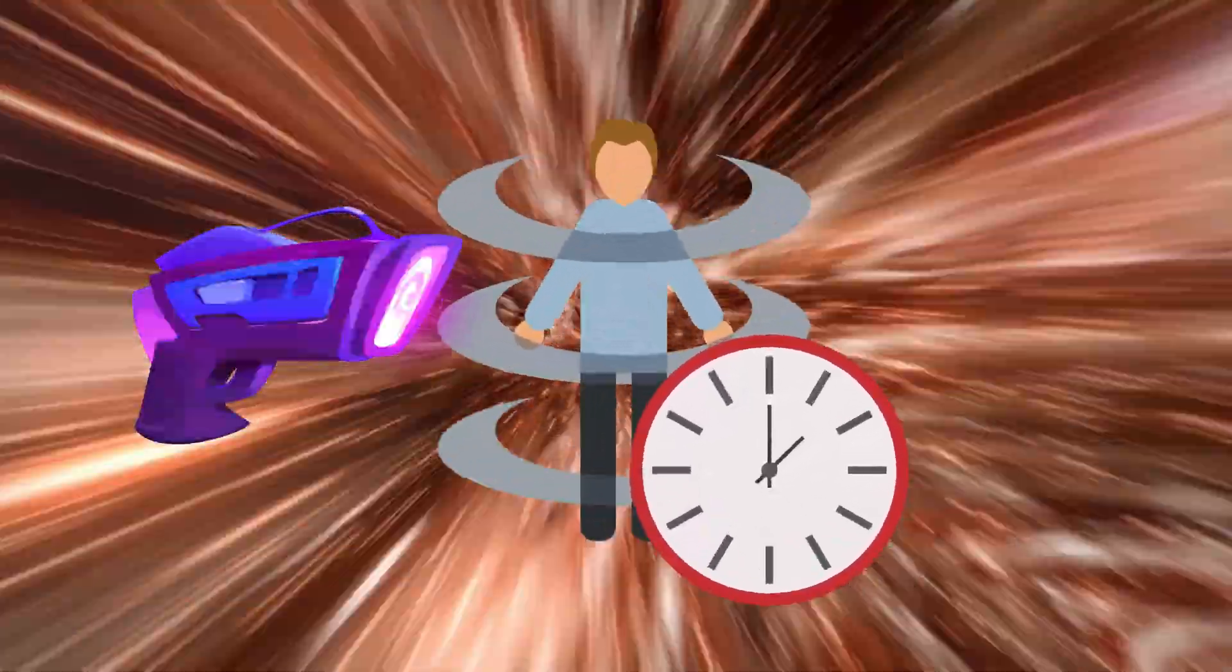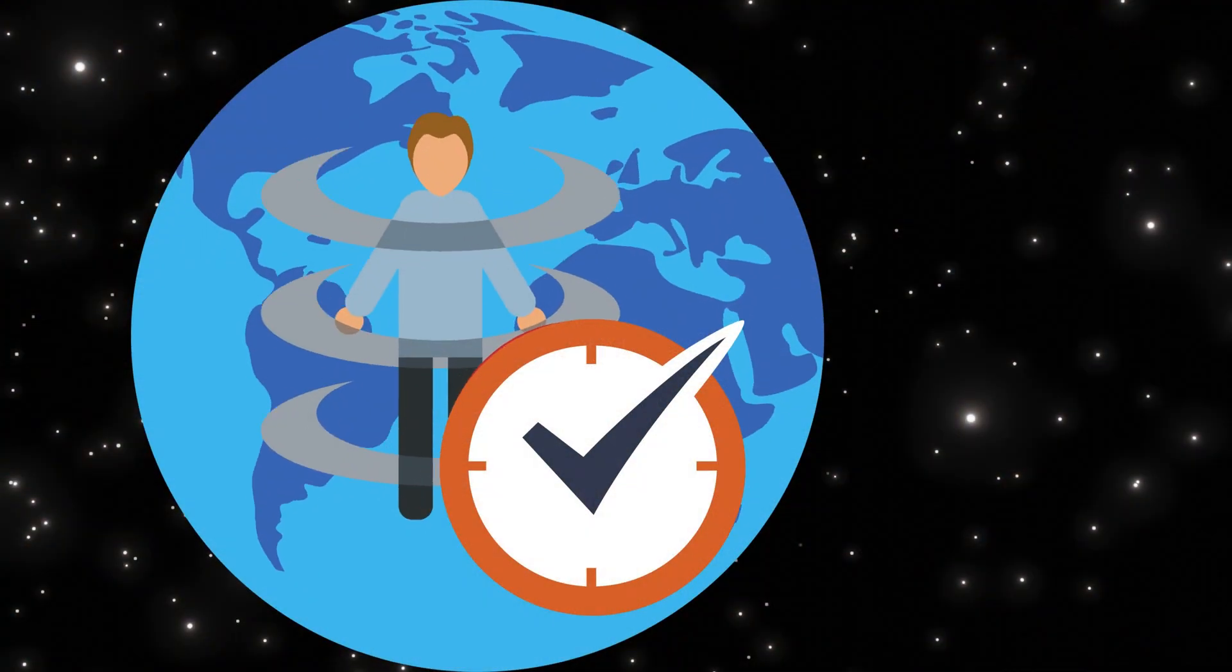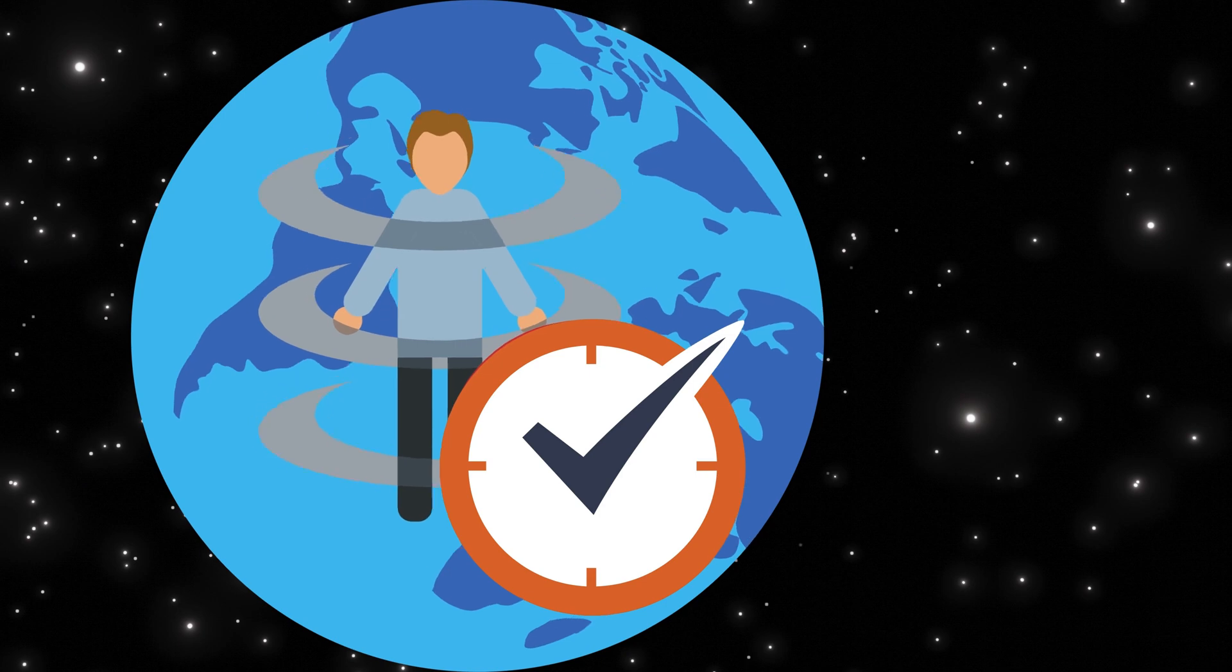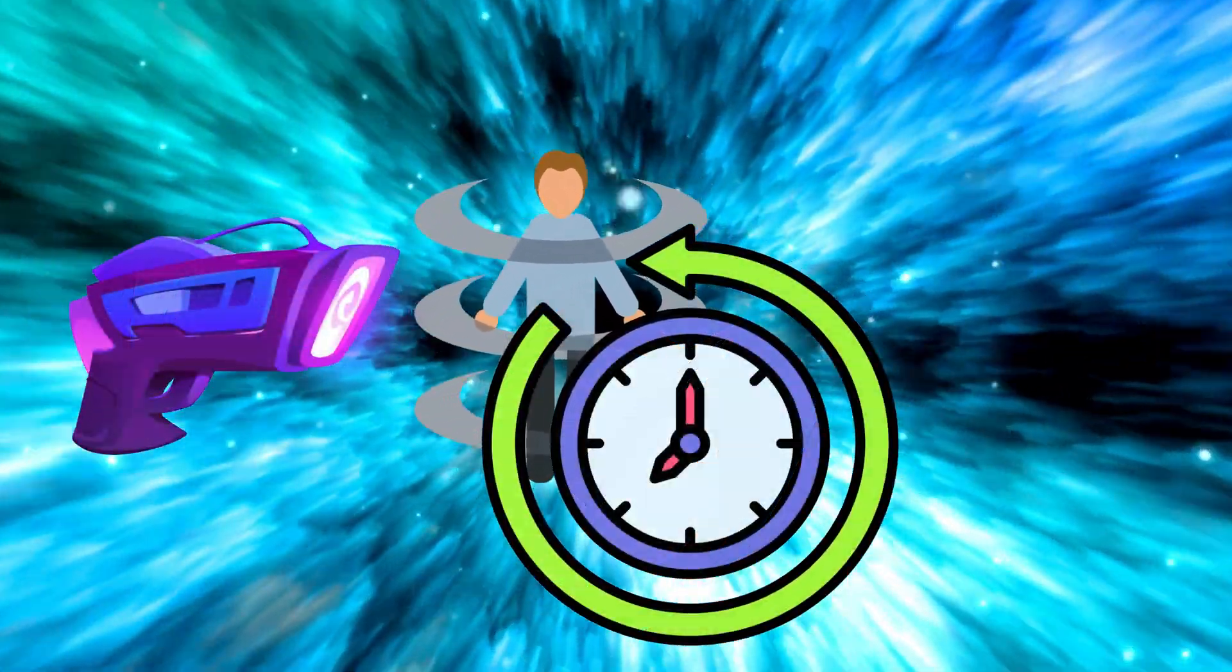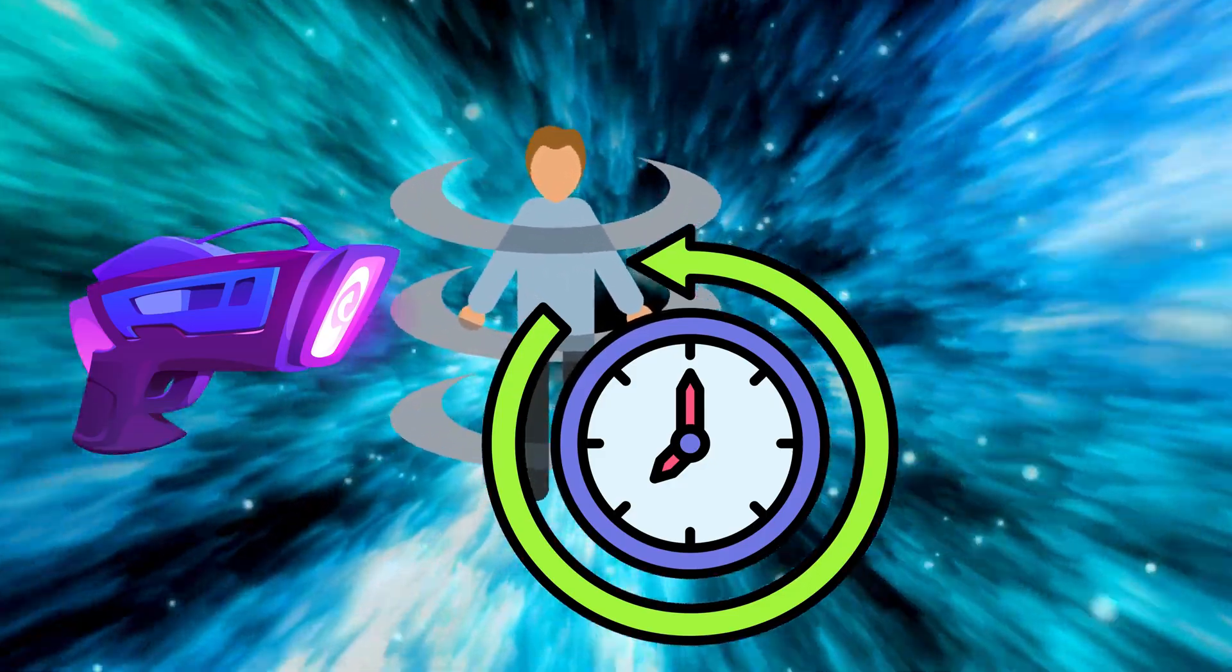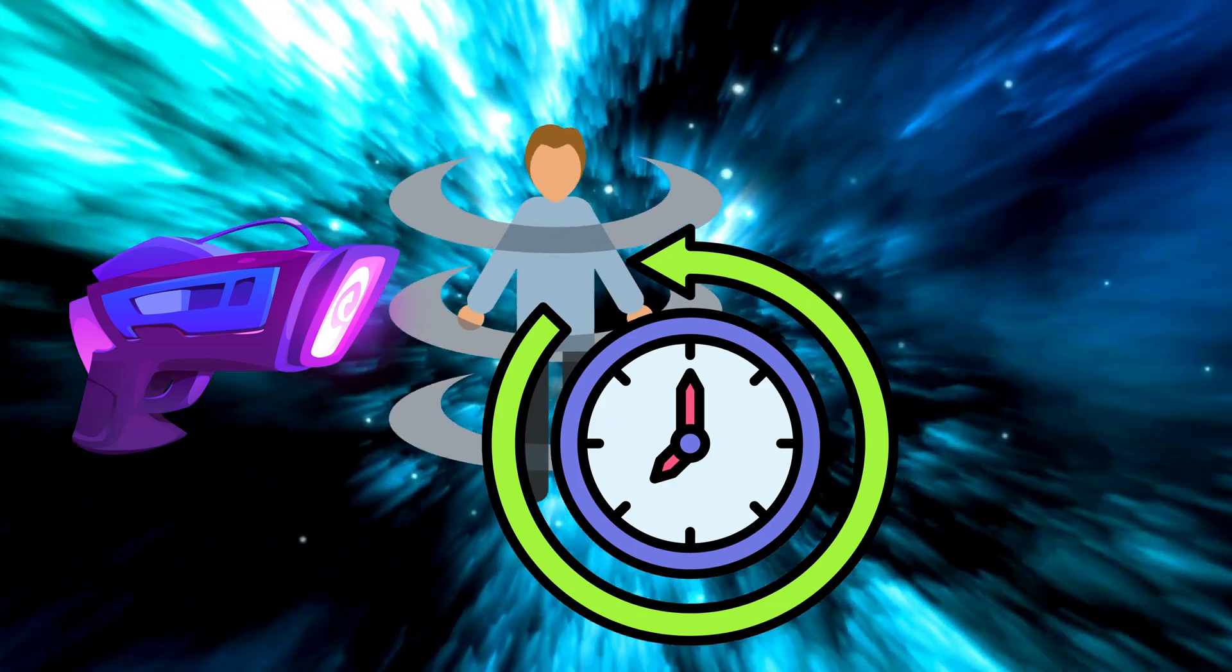Imagine you stumble upon a mysterious object, like a futuristic gadget, with no clue where it came from. You then travel back in time and leave that same object in the past, where it's eventually discovered by your past self. So where did the object originate? This paradox creates a closed loop, a kind of chicken or the egg scenario with no beginning or end.